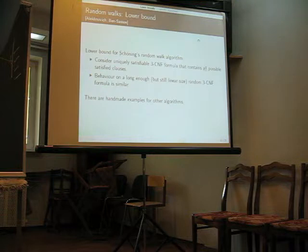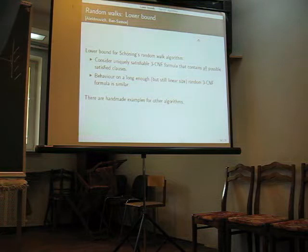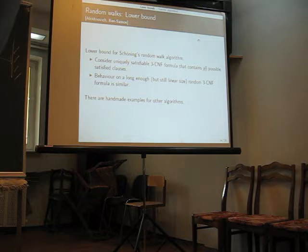So, for specific algorithms, for Schoening-Cell-Berison, there is a lower bound by Novich and Ben-Sasson, which actually first considers the complete formula. You take a satisfying assignment and you take all clauses that are satisfied by this assignment. Then this formula is very symmetric, and it is relatively easy to analyze the behavior of random walk algorithm on this formula. I would say, analyzing it is an exercise for probability theory students.